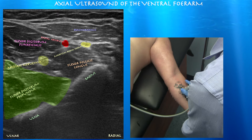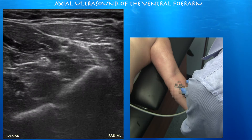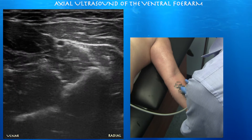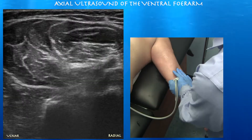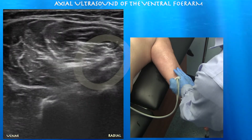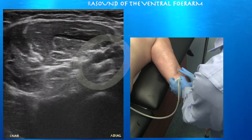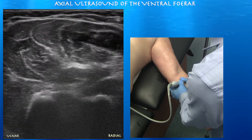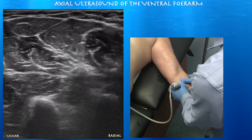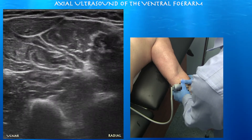And here we are going a little bit distally. You can appreciate those muscles again, also appreciate the radial artery and the superficial radial nerve underneath the brachioradialis muscle. Here we're a little bit proximal and you can see some of the major blood vessels such as the ulnar artery and the radial artery, but at this point it's a little bit hard to tease them out.